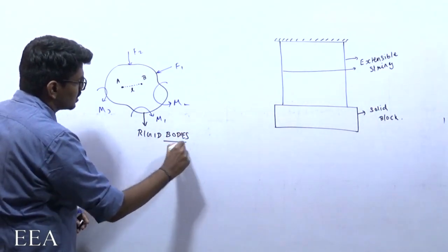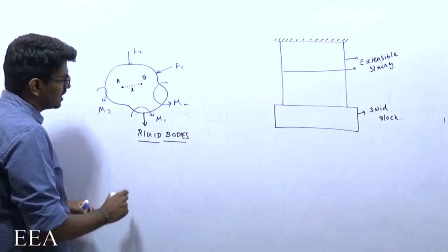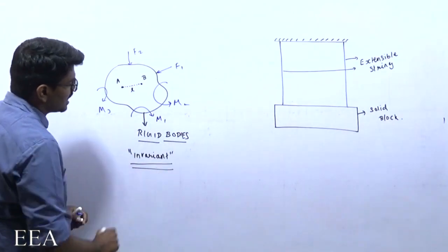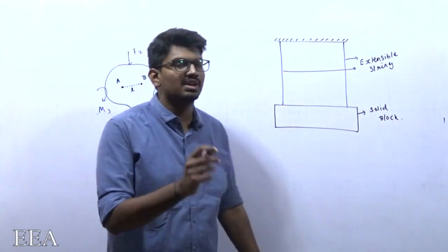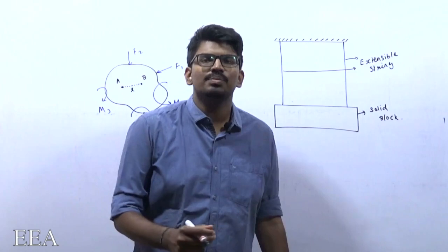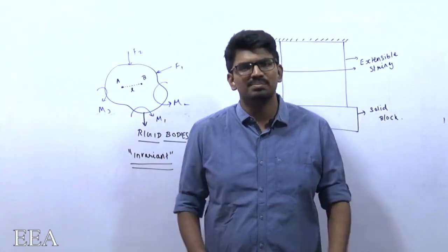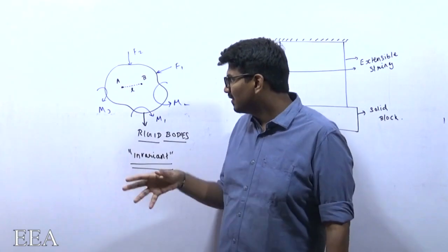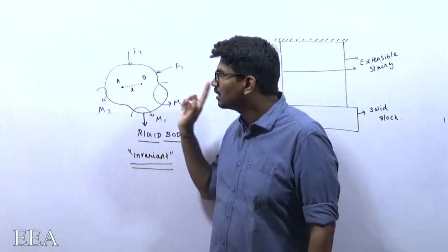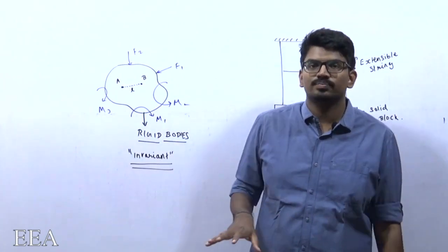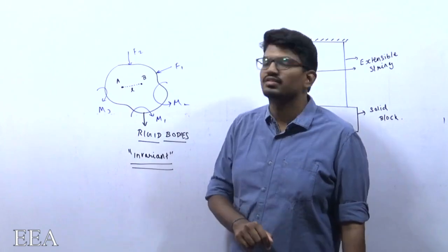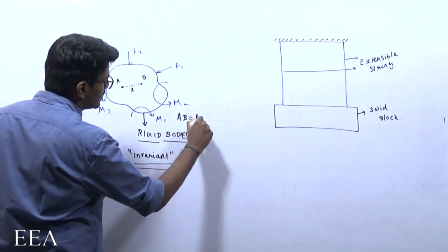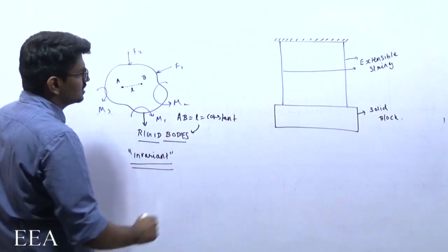The distance between two points must be invariant — it should not vary at all before or after application of the force. Simply put, the body is not getting deformed. A rigid body is one where the distance between any two points in the body is invariant and does not change. If AB equals L, which is constant always, then it is a rigid body.